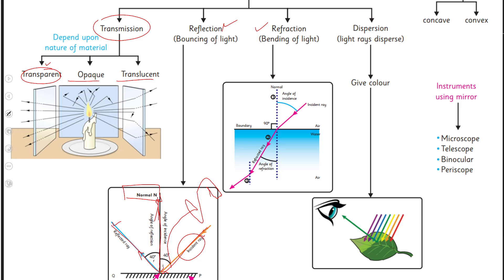Uske ilawa humne discuss kiya tha refraction ko which is basically defined as the bending of light as it changes its medium. Jaise hi denser medium mein enter hogi yeh apne path ko thora sa bend kar legi towards the normal. Isi tarah jaise hi humare paas yeh again apne medium ko change kar legi like yeh water se dubara humare paas air ke under enter hogi yeh dubara se apne path ko thora sa change kar legi.